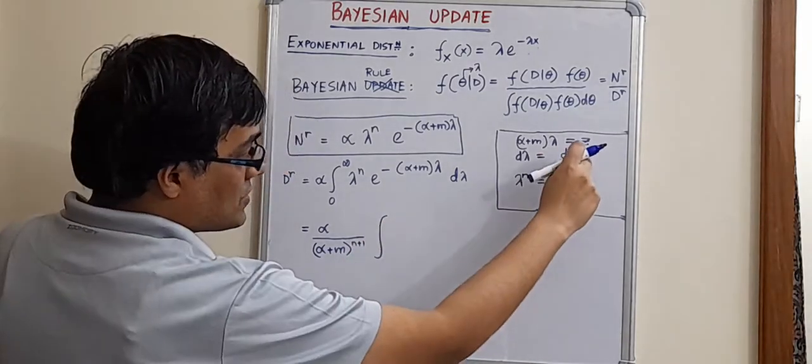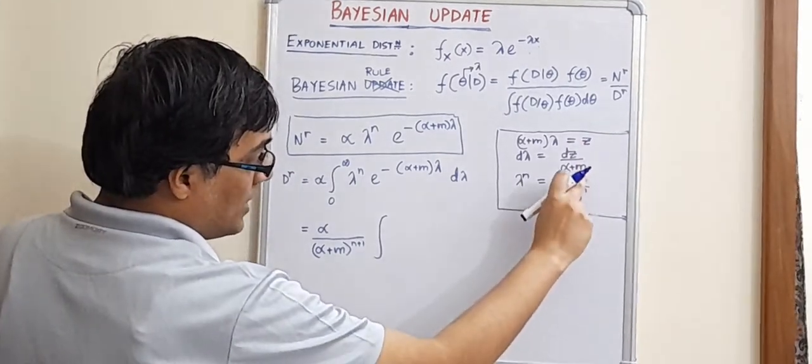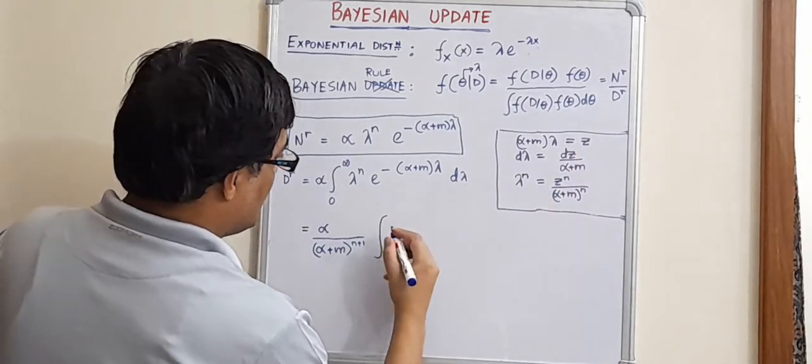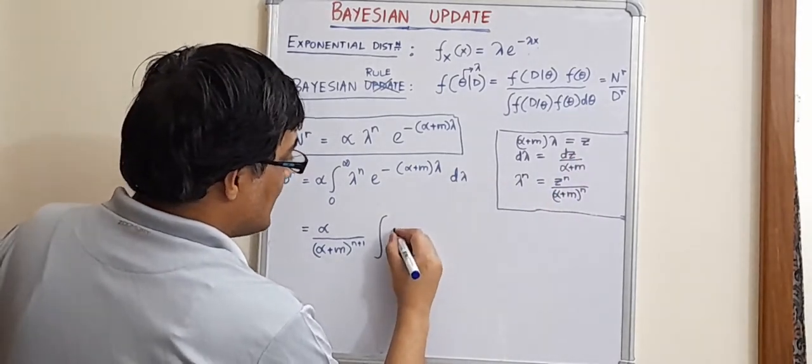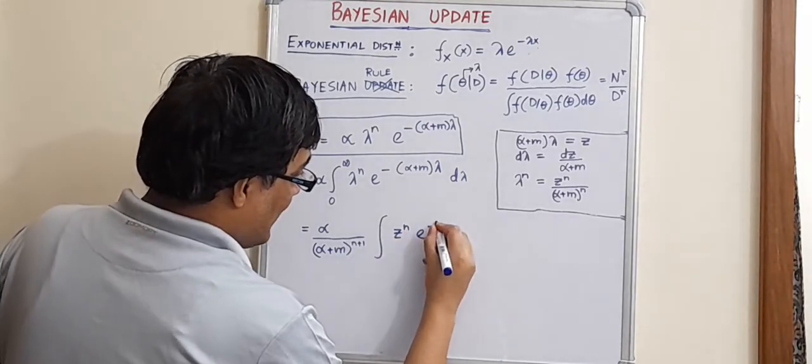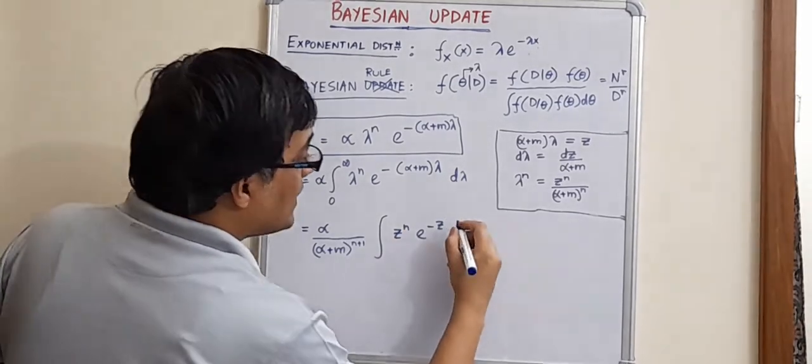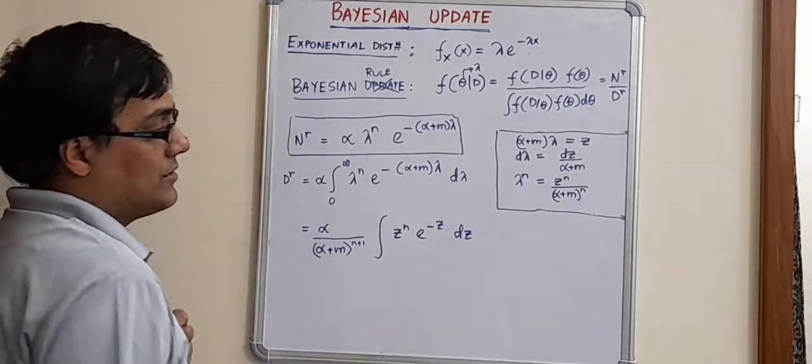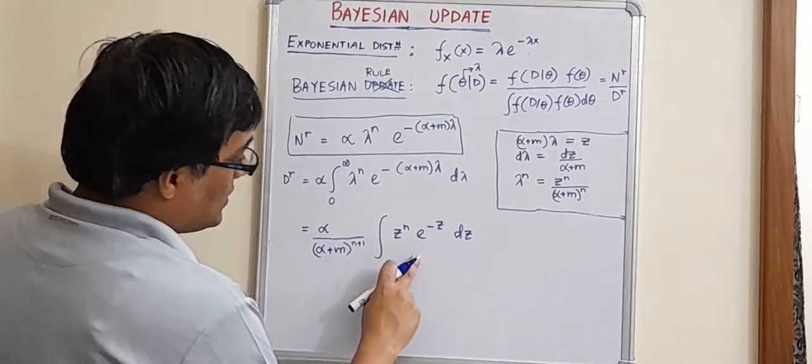Why? Because this gets substituted. So, this alpha plus m to the power n gets multiplied by alpha plus m, right? So, you are just substituting. So, this becomes z to the power n into e to the power minus z and this d lambda becomes dz. We have just made the substitutions and did nothing else, right?